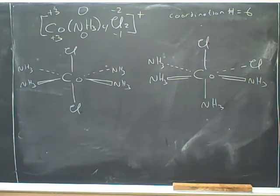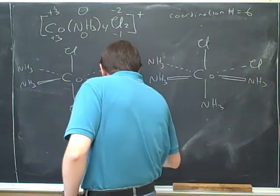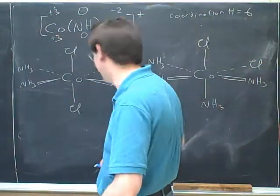But how many isomers do we have and is this one different? Because we can put them in different positions. Like for example, two NH3s where the CLs were? Draw what you were thinking there. Like here. This one. Two NH3s here and then CL. Is it going to be the same as this one? Yeah. They are the same. And you can see that in your drawing.